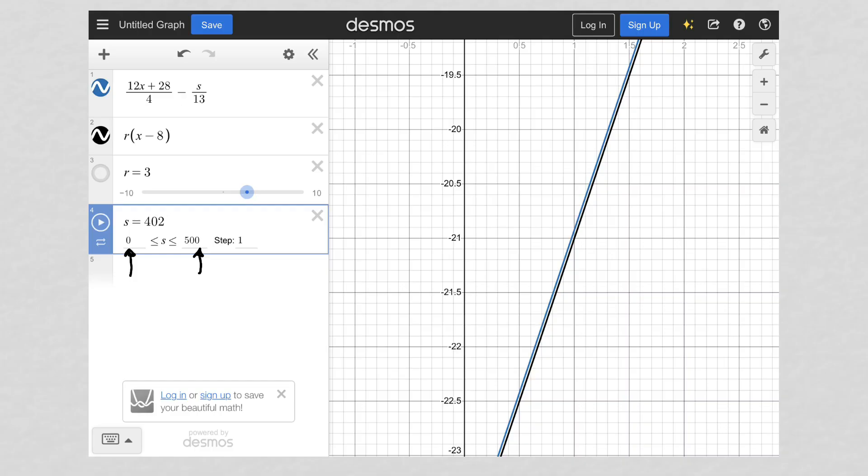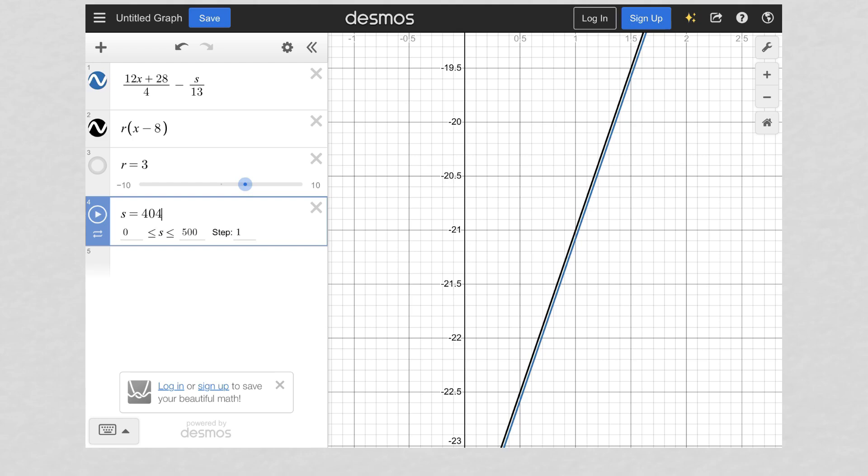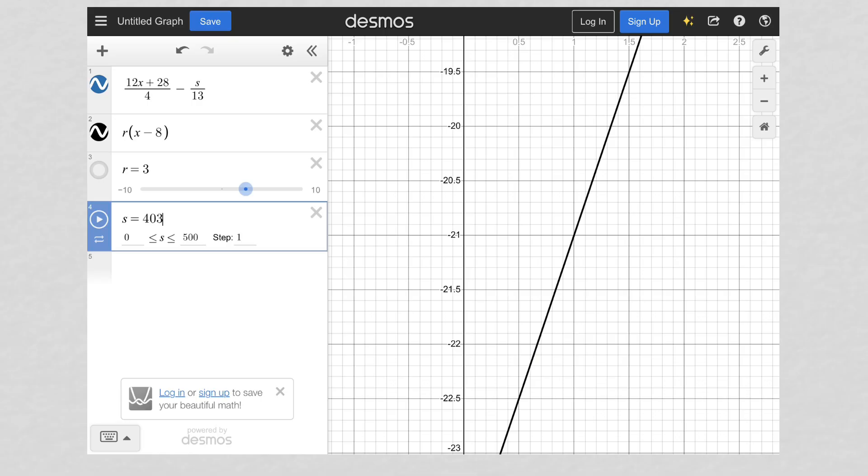So you can see here by the time I got to 402 for S, my blue line was right to the left of the black line. And at 404, it's to the right of the black line. So I know that at 403 is where I have the exact overlap, right?